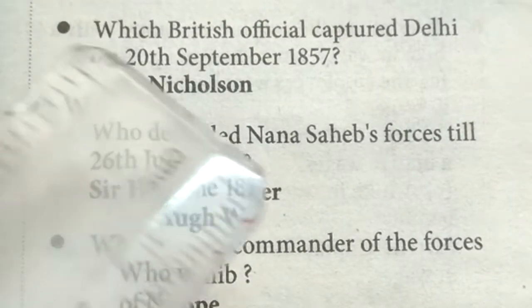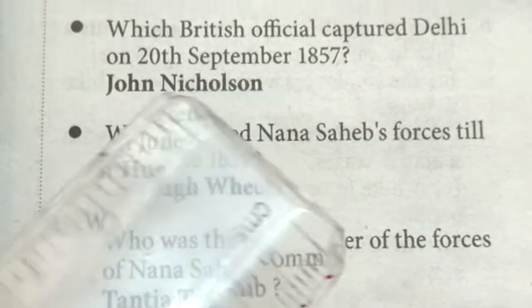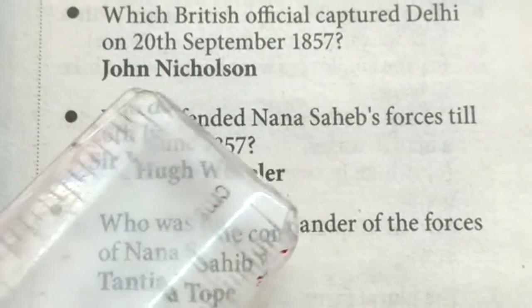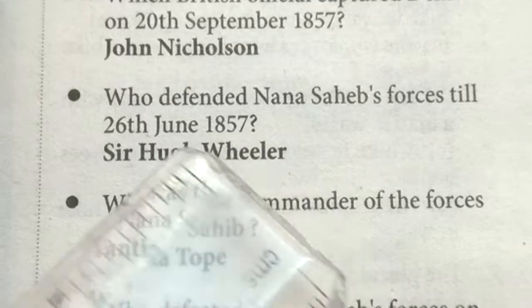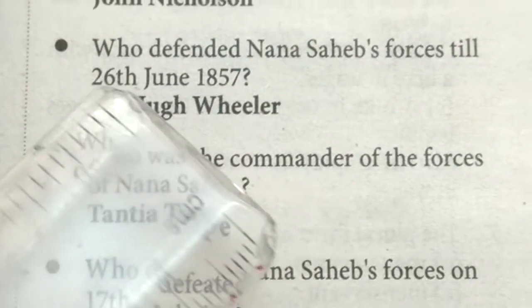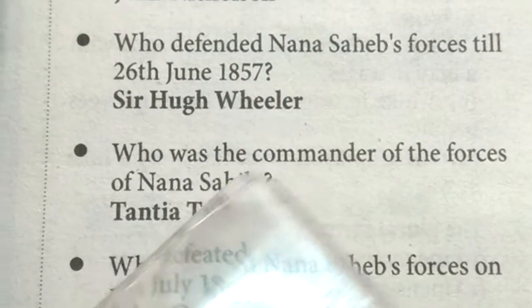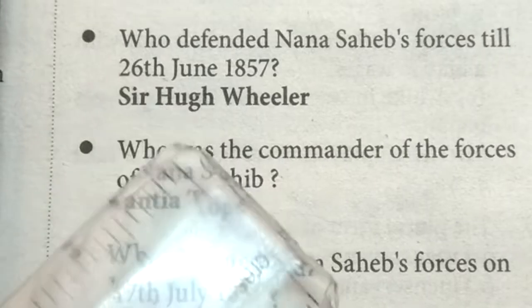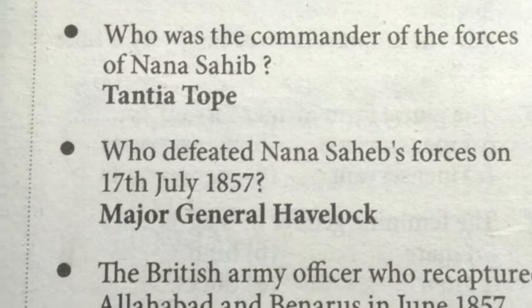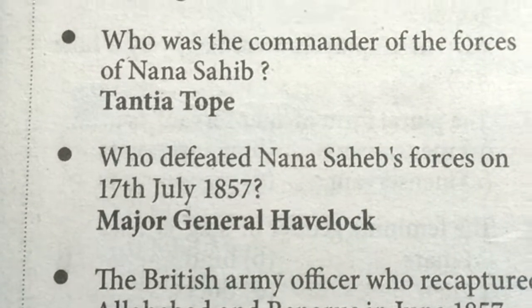Jawaharlal Nehru stated about the revolt that it was a feudal outburst headed by feudal chiefs. Which British official captured Delhi on 20th September 1857? John Nicholson. Who held off Nana Sahib's forces until 26th June 1857? Sir Hugh Wheeler. Who was the commander of Nana Sahib's force? Tantia Tope.